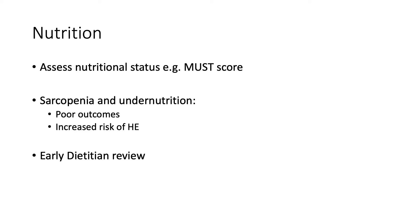The bundle also details considering other possible diagnoses, for example performing a CT scan to exclude subdural haematoma in patients presenting with confusion, as these patients have coagulopathy and may have this as an additional pathology. One aspect that the bundle doesn't cover, but is increasingly important, is the role of nutrition. We know that sarcopenia and undernutrition contribute to poor outcomes and can increase risk of encephalopathy. Therefore, assessing nutritional status and instituting dietetic review at the front door gives patients a better chance of optimising their nutritional status.